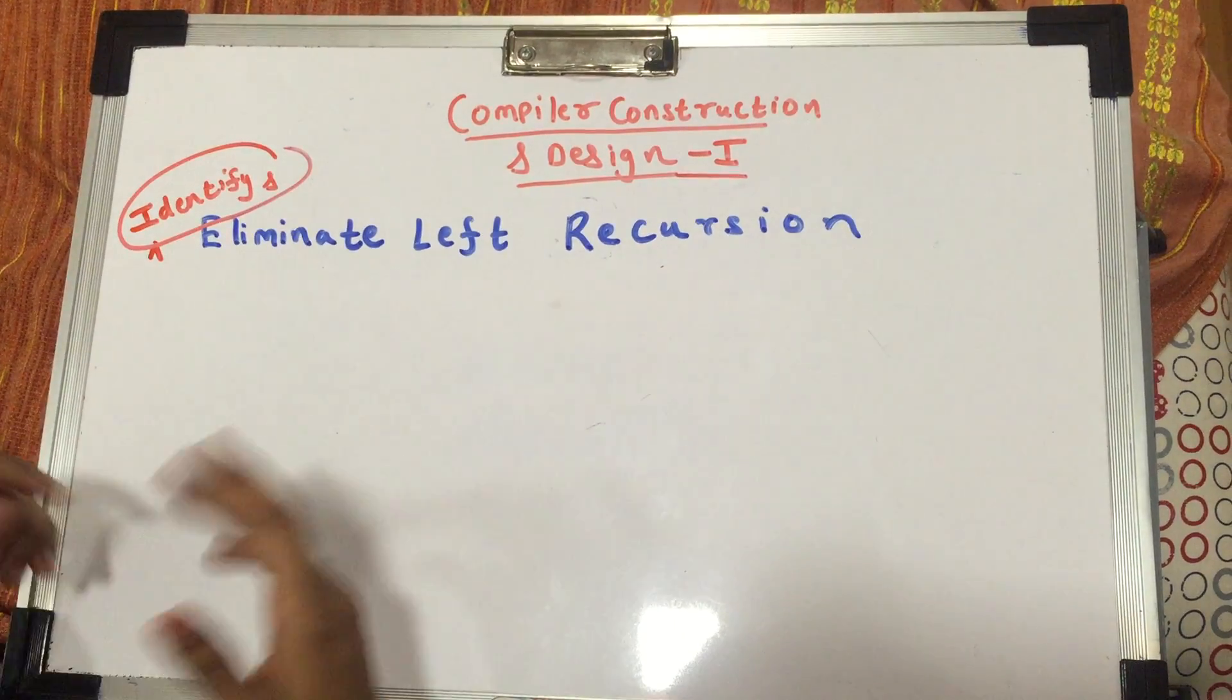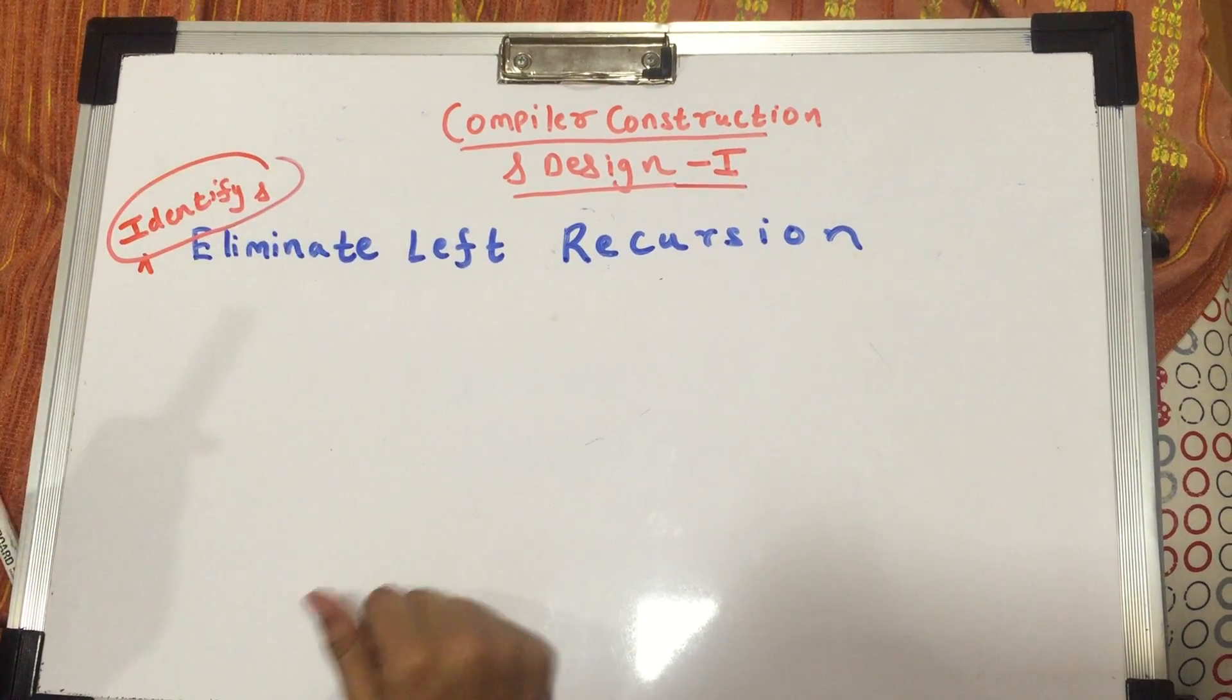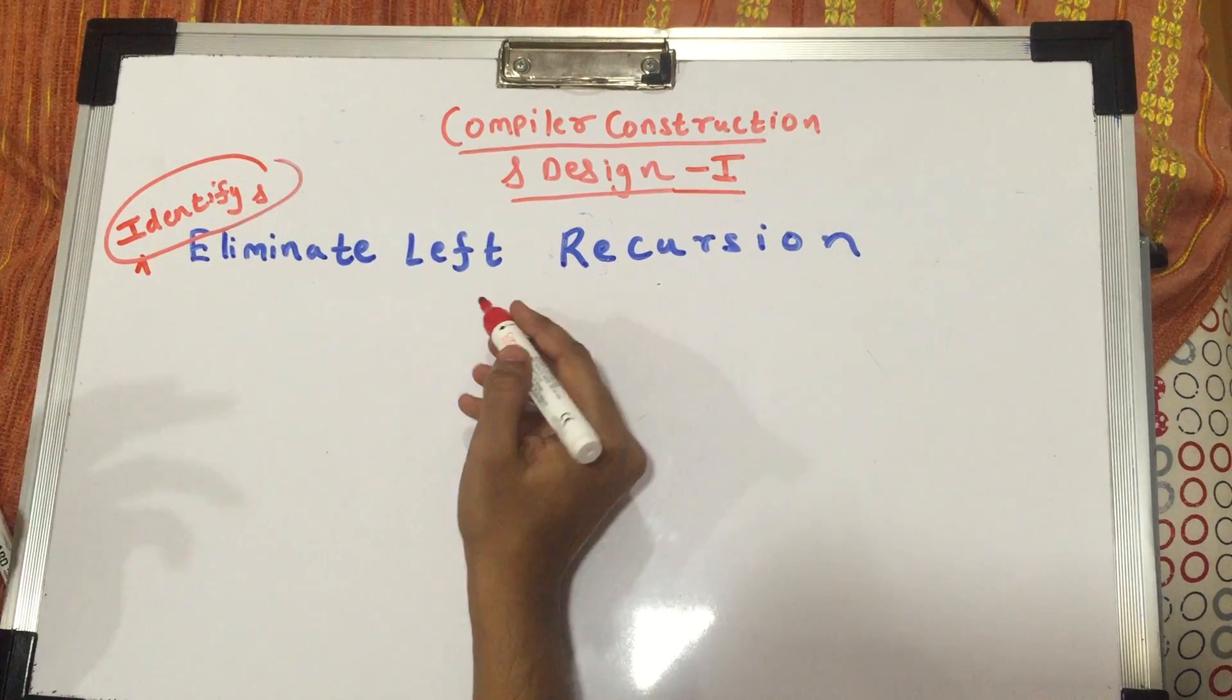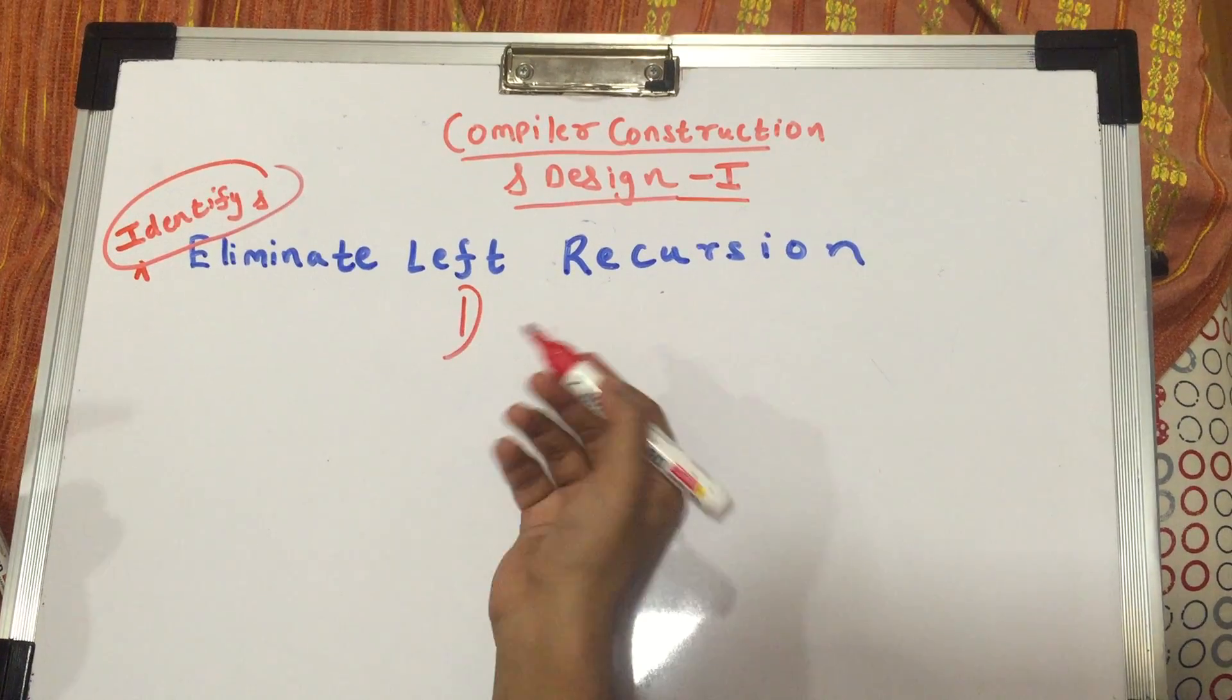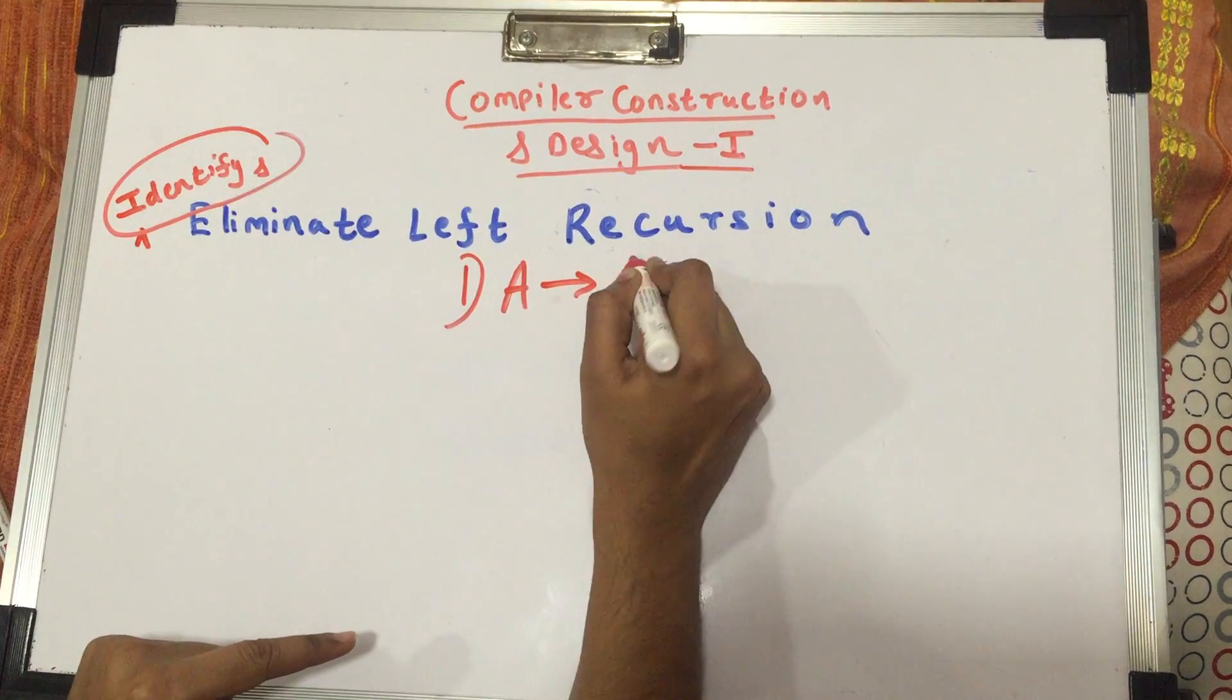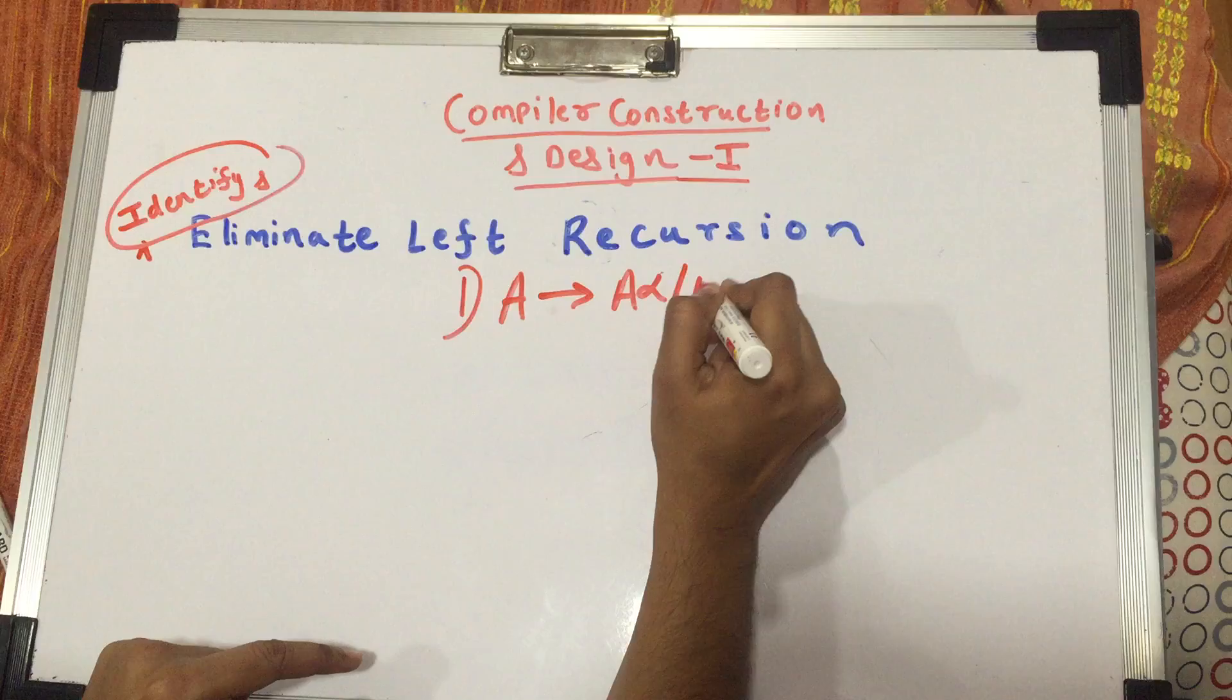So the first step to eliminate left recursion is to identify what a left recursion is. How do you identify whether a grammar is left recursive or not? Well, a grammar is said to be left recursive if it is of the form A gives you A alpha slash beta.